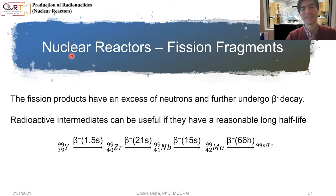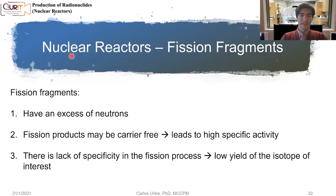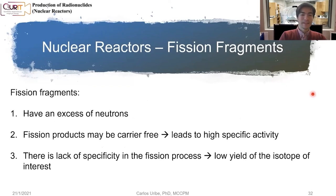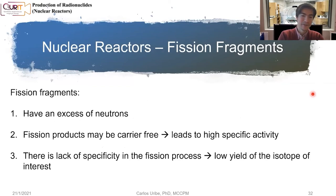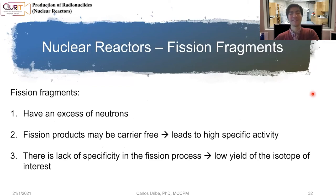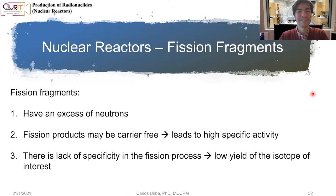To summarize fission fragments: they have an excess of neutrons and may be carrier-free, which can lead to high specific activity. However, there is a lack of specificity in the fission process because so many different daughter isotopes can result, making it difficult to guarantee you'll obtain just the isotope you want — it may be a mixture of many products.